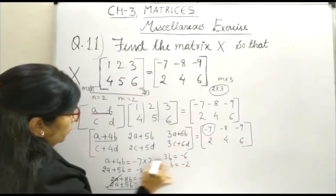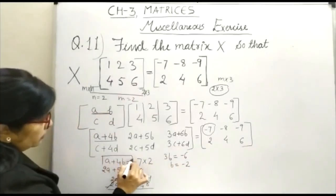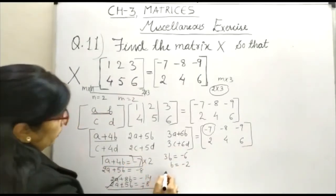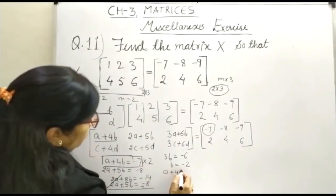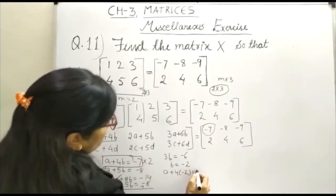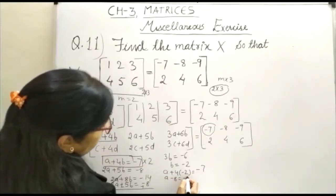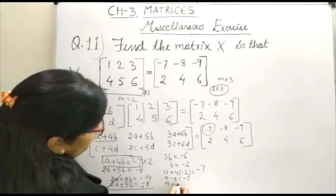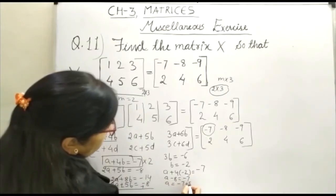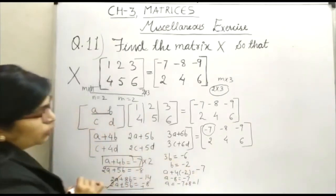Keep the value of B minus 2 in this equation. In this equation, so it becomes A plus 4 times minus 2 is equal to minus 7 and A minus 8 is equal to minus 7 and A is equal to minus 7 plus 8 that is equal to 1.